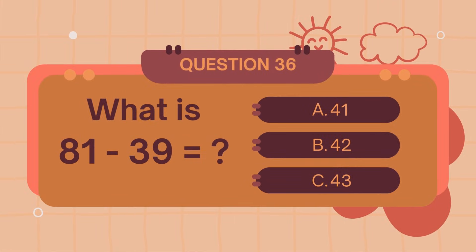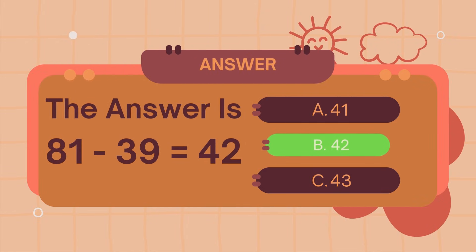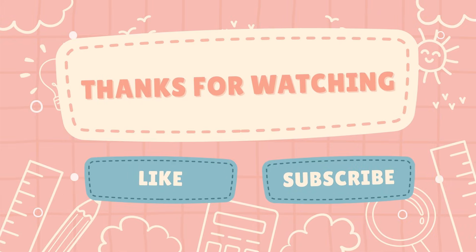What is 81 minus 39? The answer is 42. Great job, math masters! Don't forget to like, subscribe, and we will see you in the next math adventure.